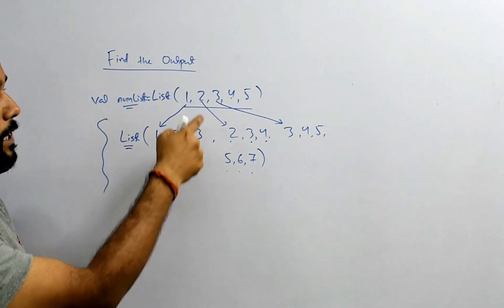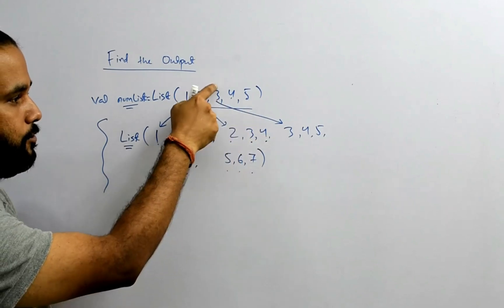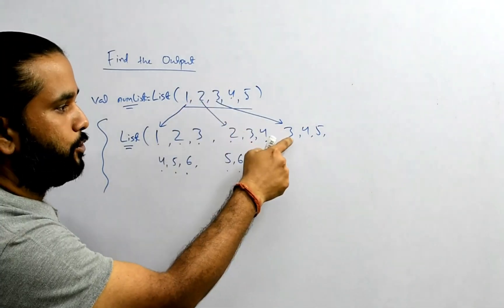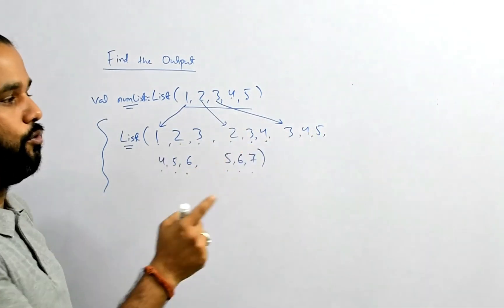For 2 it is 2, 2 plus 1 which is 3, and 3 plus 1 which is 4. For 3, it's 3, 3 plus 1 is 4, 3 plus 2 is 5, and so on.